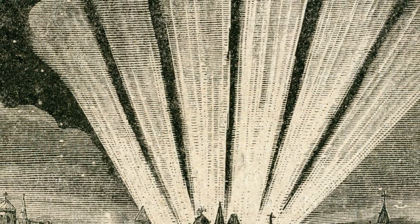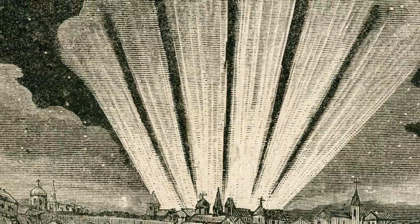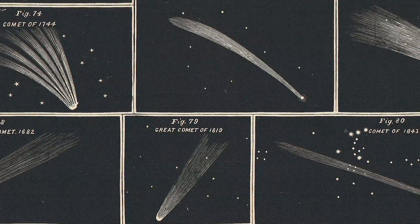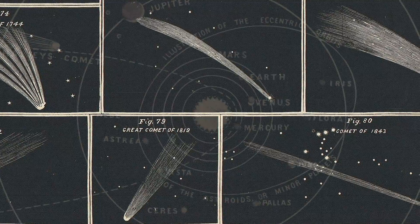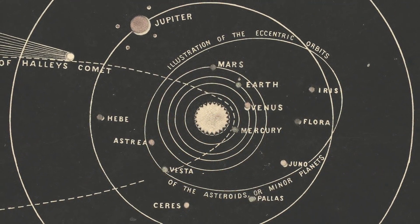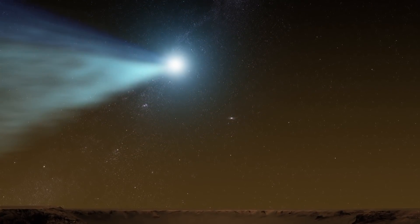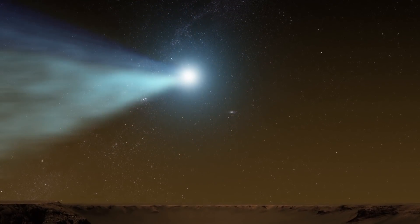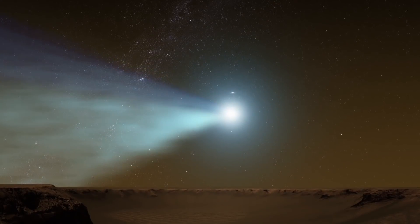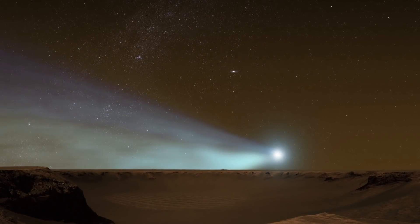In 1743, observers claimed to have seen a comet with six tails. Little did they know that the streaks behind the comet could be related to the origins of the solar system. In time, scientists theorized that the dust in a comet's tail had been combed out into bands known as striae. How the striae formed, however, was still a mystery.